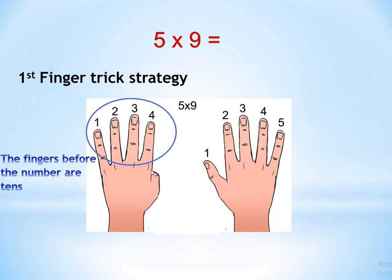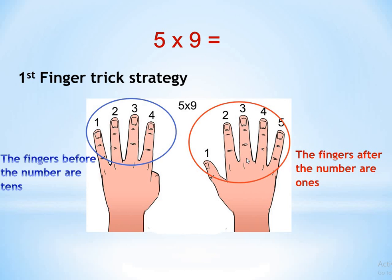The fingers before the finger you put down represent the tens place. How many fingers before it? 1, 2, 3, 4 — so we put 4 in the tens place. The fingers after the finger you put down represent the ones place. Here we have 1, 2, 3, 4, 5 — five fingers in the ones place. Four in the tens place and five in the ones place, so the answer — the product — is 45.